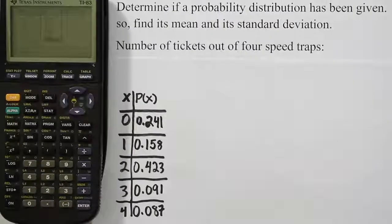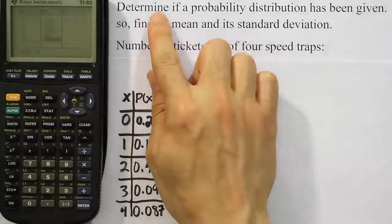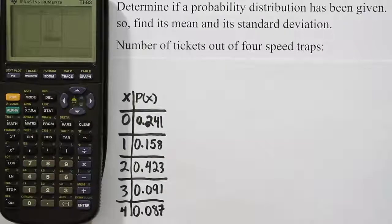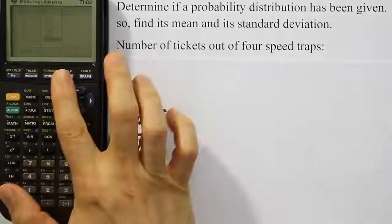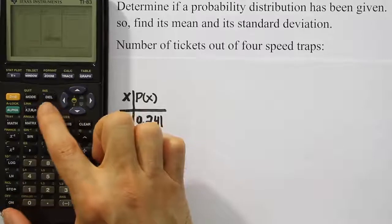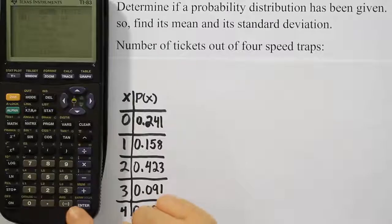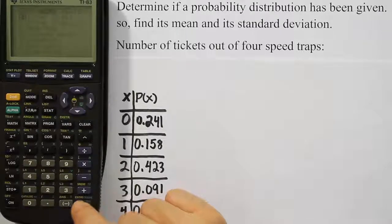Now the calculator, when it does its work, is going to answer the first part, which is to determine if there's a probability distribution given. It'll tell us that and I'll show you how it does that. But here's how you finish the problem. Once you have the data entered, you're going to press the stat key. You're going to arrow over to the right where it says calculate, and you're going to hit enter to select one variable statistics.